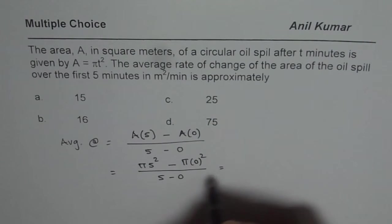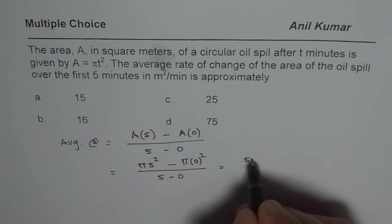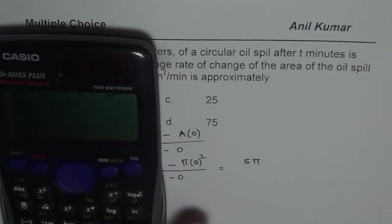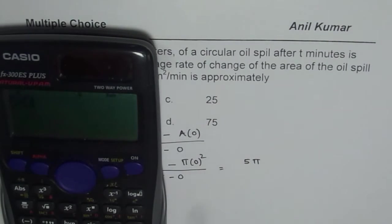Our answer here is 5 pi. 5 times pi. Pi is 3.14. You can use 3.14. The approximate answer will be equal to, in decimals, 15.7.